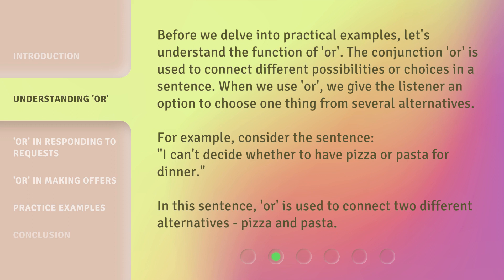For example, consider the sentence: 'I can't decide whether to have pizza or pasta for dinner.' In this sentence, 'or' is used to connect two different alternatives — pizza and pasta.